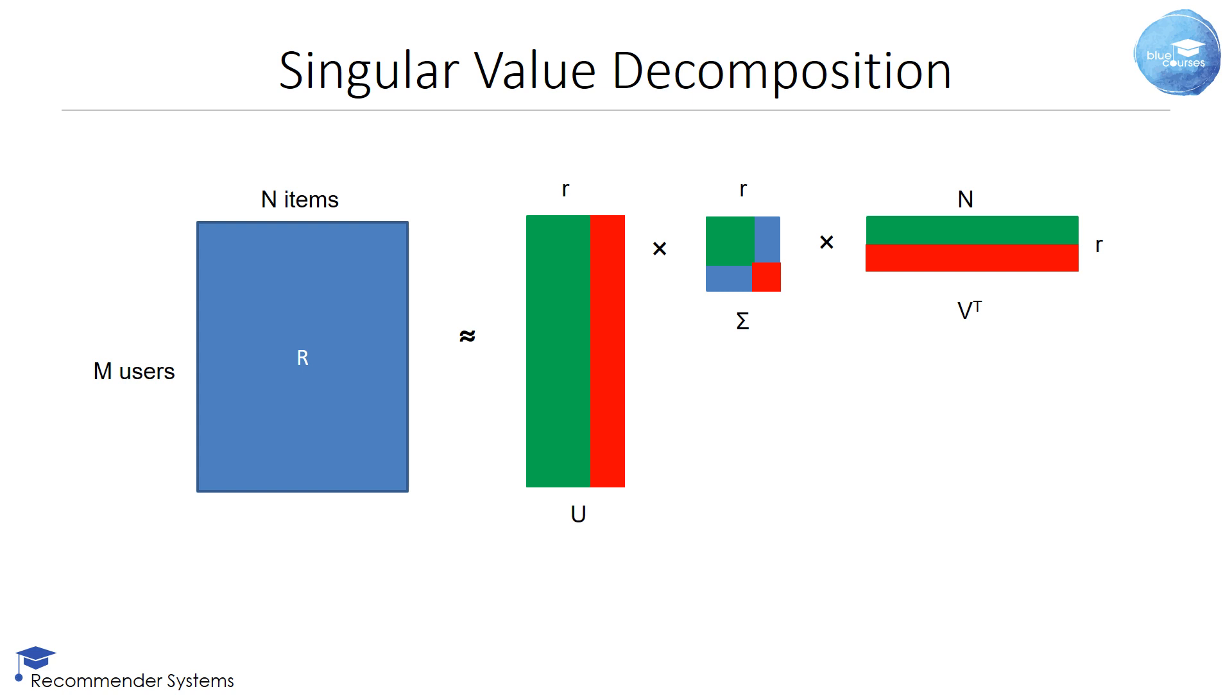You can see this illustrated here. Let's first look at the sigma matrix with the singular values. Suppose the singular values in the red square are low and the ones in the green square high. If we set the singular values in the red square to 0, then you can see that the red columns in U become useless. Likewise, the red rows in VT become useless. This will result into a more compact approximation of the rating matrix R.